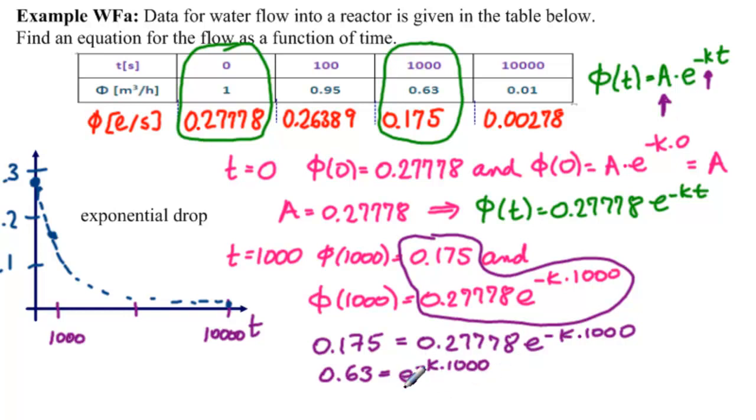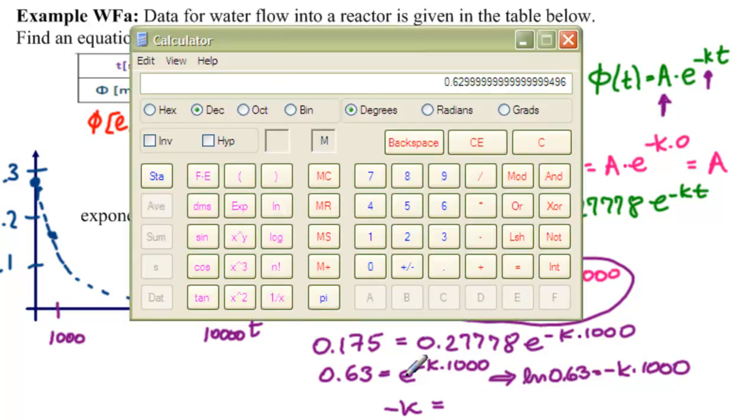If we get to k, we want to take the opposite, or inverse function of e, which is ln. And so, we take ln of both sides. So, ln of 0.63 equals minus k times 1,000. And from here, we can solve to get minus k equals ln of 0.63 divided by 1,000. So, let's do that.